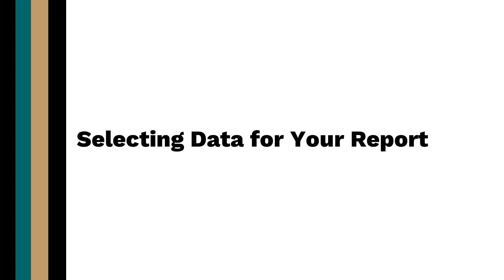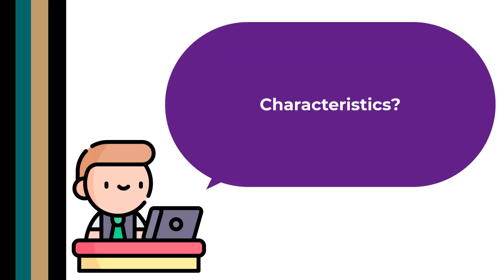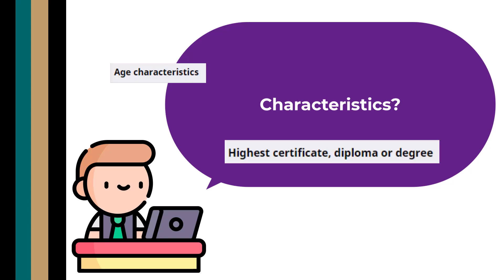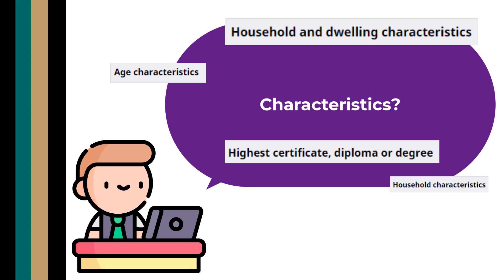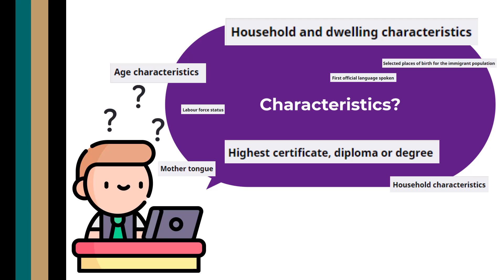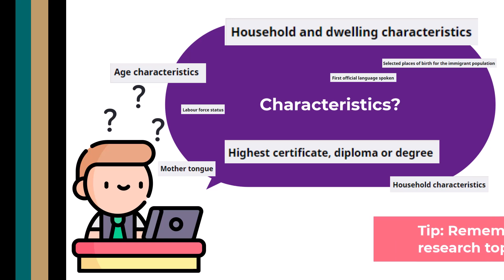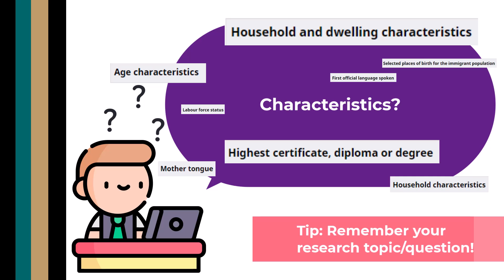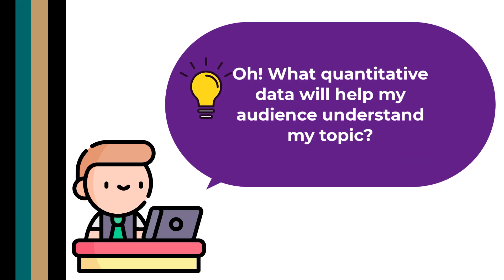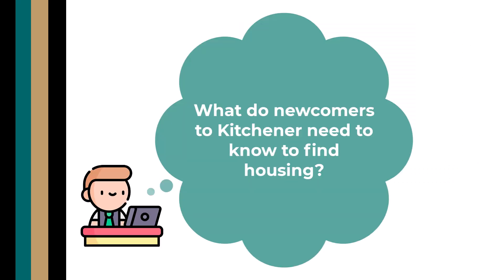When the data is new to you, you should spend some time exploring the variables or characteristics. With so much data, you will need to think critically and be selective about the data you choose to include in your report. Select census data that contributes to your analysis of the research question. Ask yourself: what quantitative data will help my audience understand the topic? Let's consider our research question: what do newcomers to Kitchener need to know to find housing?